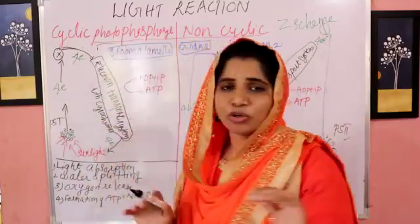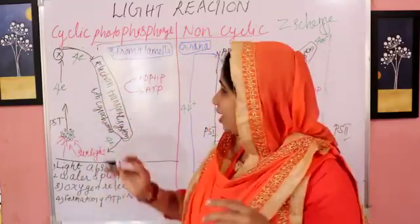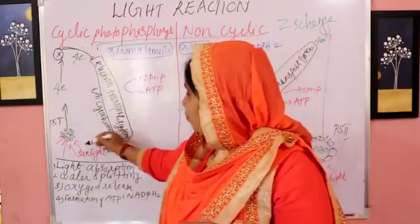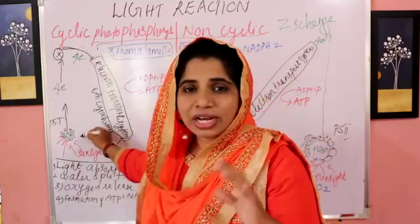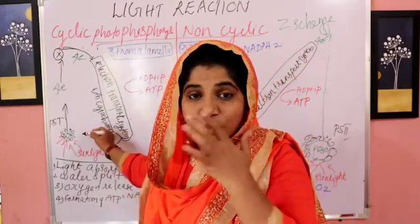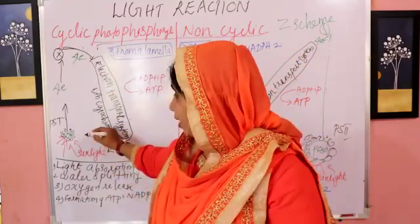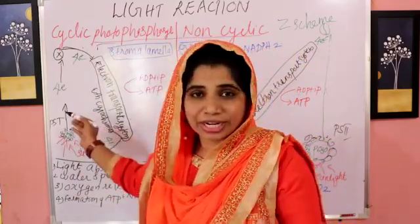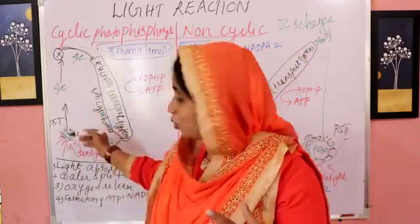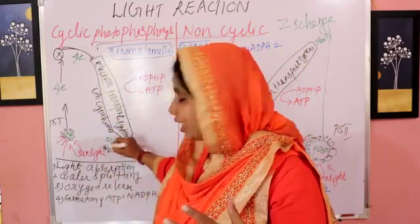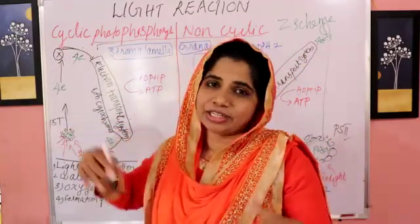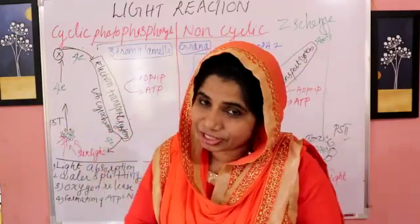In cyclic photophosphorylation: P700, Photosystem 1, P700, Photosystem 1 — and then sunlight activates it.